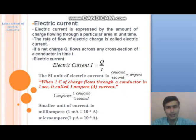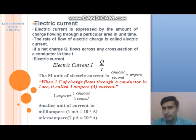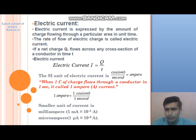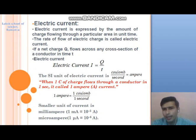Now we study about electric current. Previously we discussed electric charge — positive charge and negative charge. When this electric charge is stationary, it produces a static electric field; it is called static electricity. But when electric charge is in motion, it produces electric current — called current electricity. Electric current is expressed by the net amount of electric charge passing through any cross-sectional area per unit time.